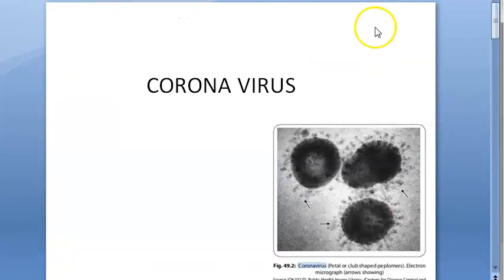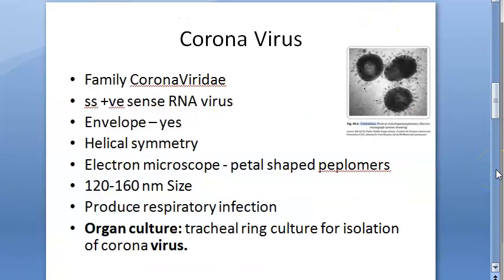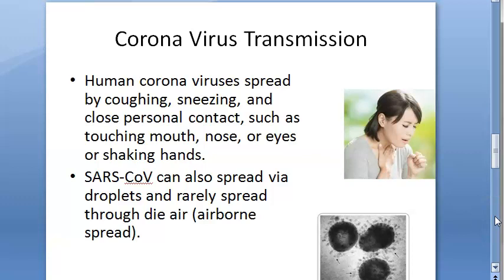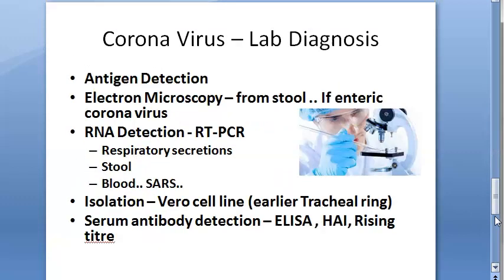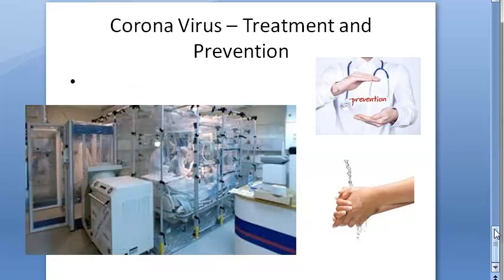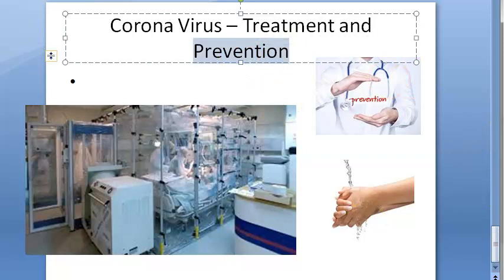Let us recap coronavirus: it is an RNA virus, has an envelope, helical symmetry, and is transmitted by cough, sneezing, and through air. Lab diagnosis involves detecting the antigen, antibody, isolating the virus, detecting RNA, and viewing under electron microscope. There is no specific treatment — only symptomatic. Prevention includes isolation, quarantine, travel restrictions, use of gloves, gowns, goggles, respirators by healthcare workers, frequent hand washing, avoiding personal contact, and avoiding contact with animals like camels. Hope you stay safe from coronavirus. Bye-bye.